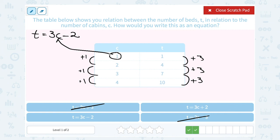And again, if I plug this in, 3 times 1 is 3, minus 2 would give me 1. Let's try it with another number. If I substitute 2 in, 3 times 2 would give me 6, minus the 2 would give me 4. So this pattern works. T equals 3C minus 2.